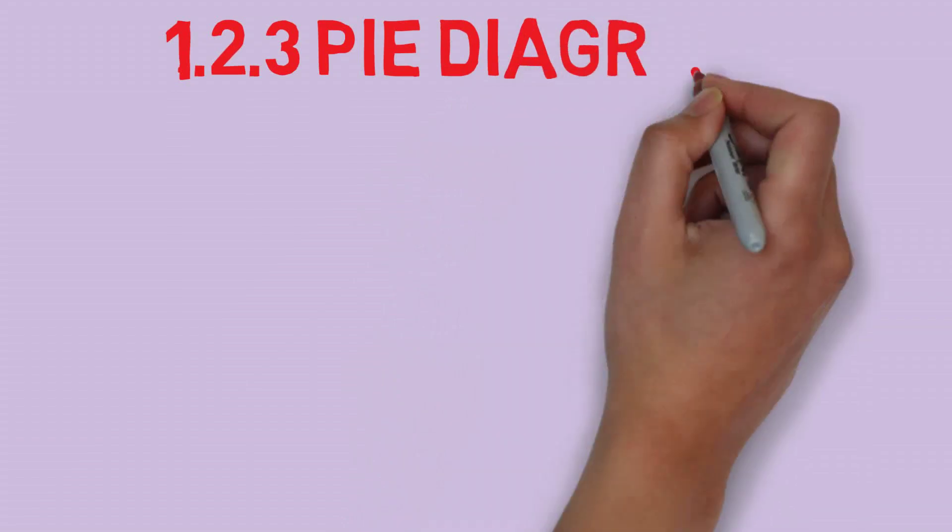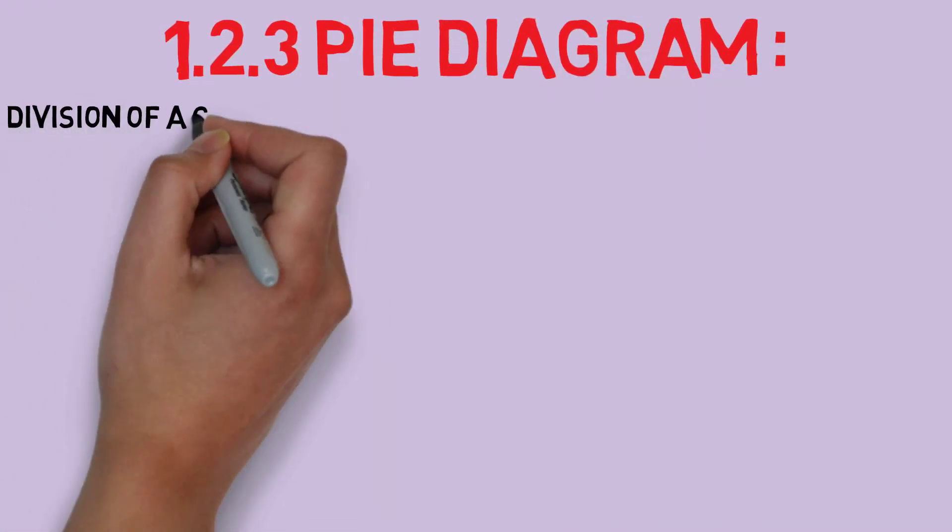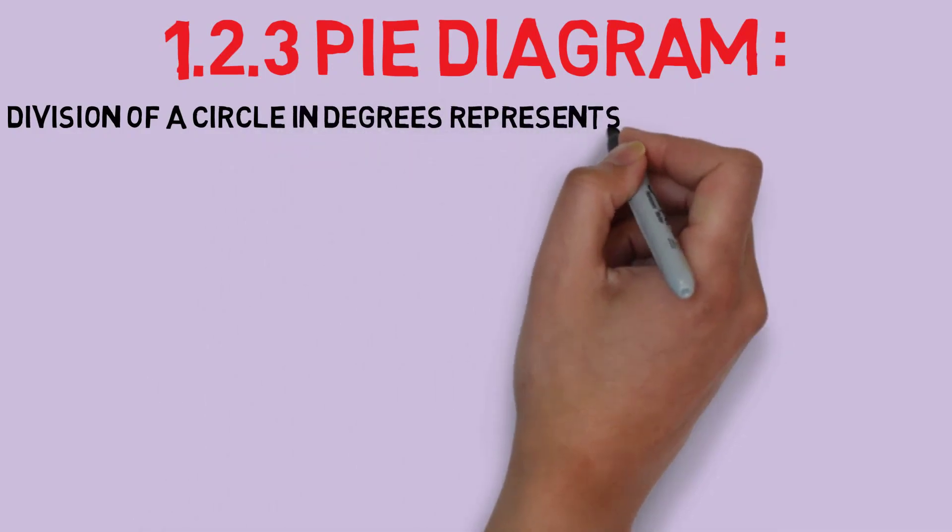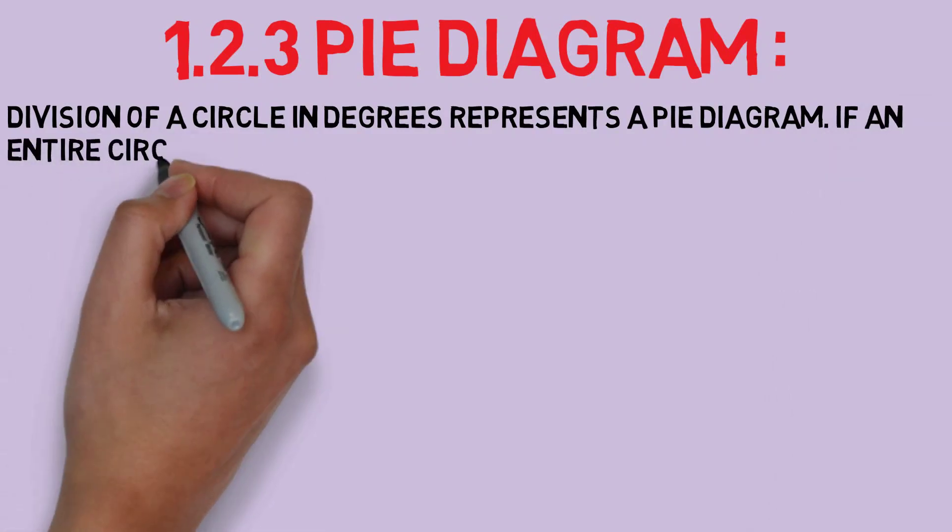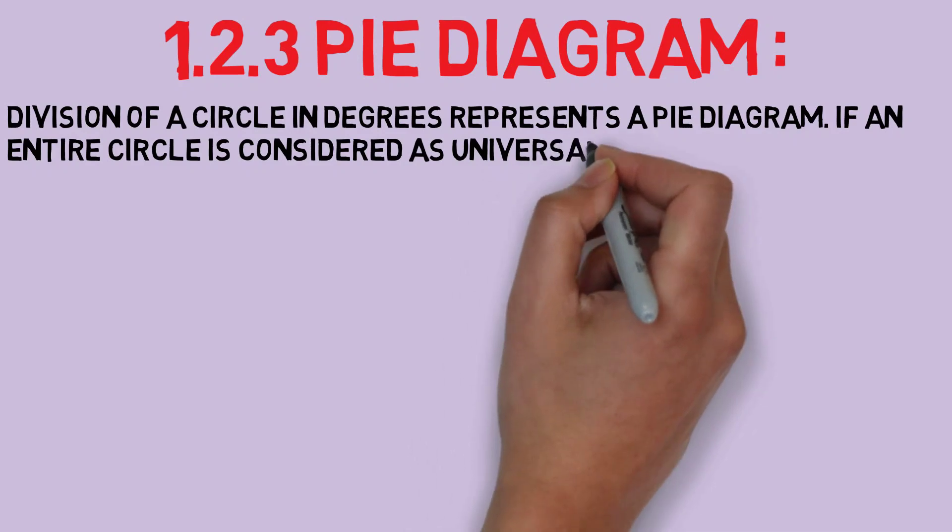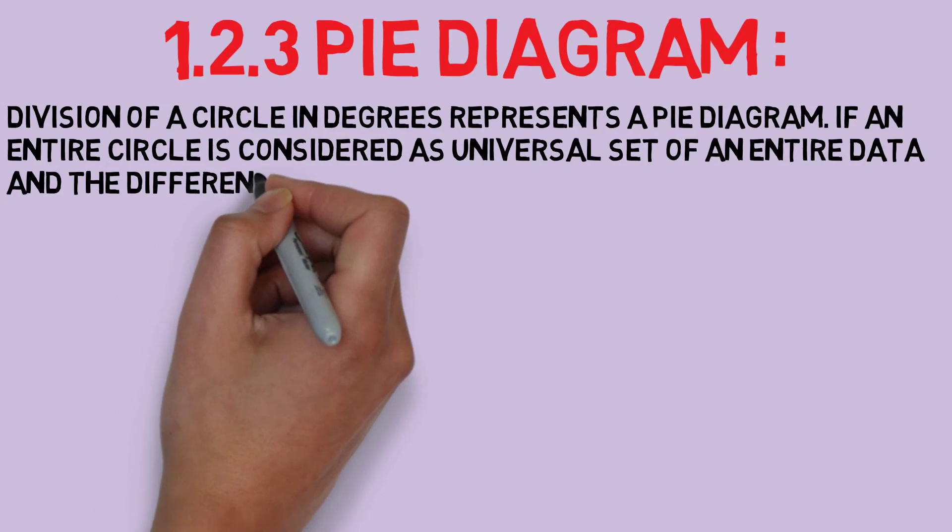Now we will learn pie diagram. A pie diagram is a circular chart which is divided into sectors in which area of each sector represents the size of data. It is also known as circle graph.